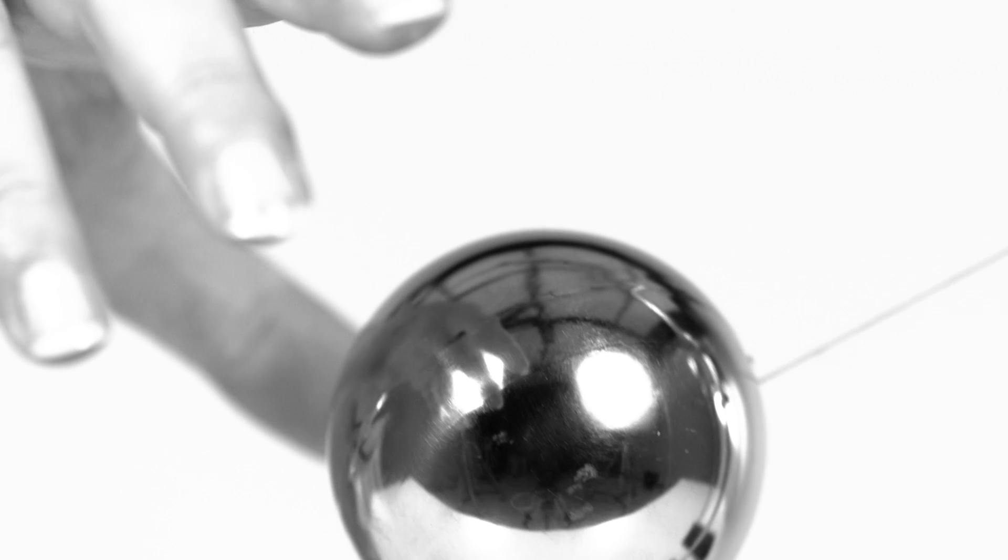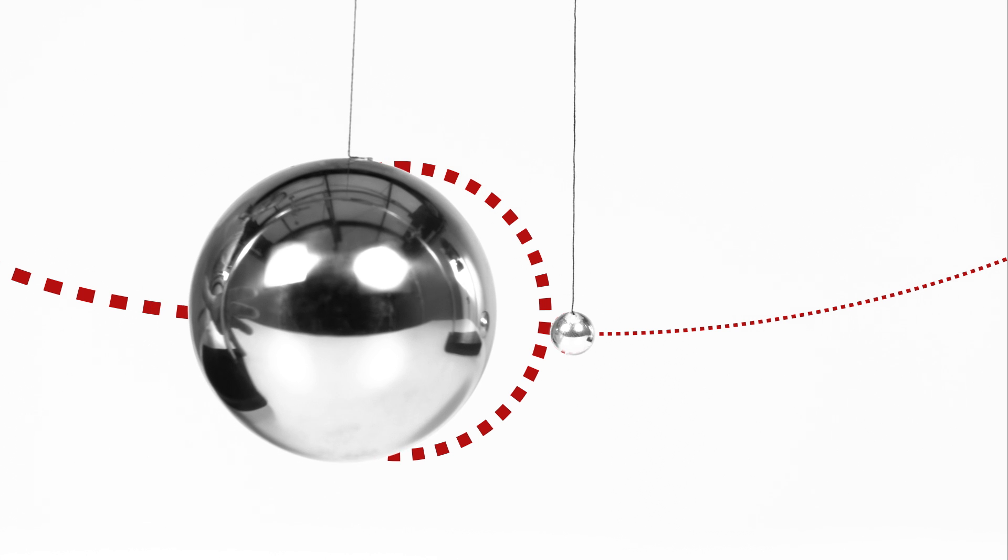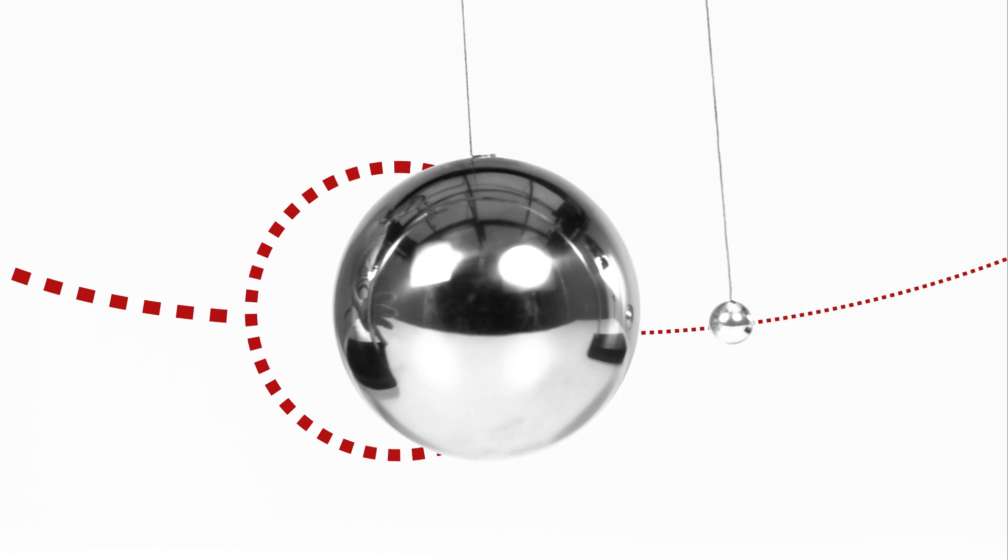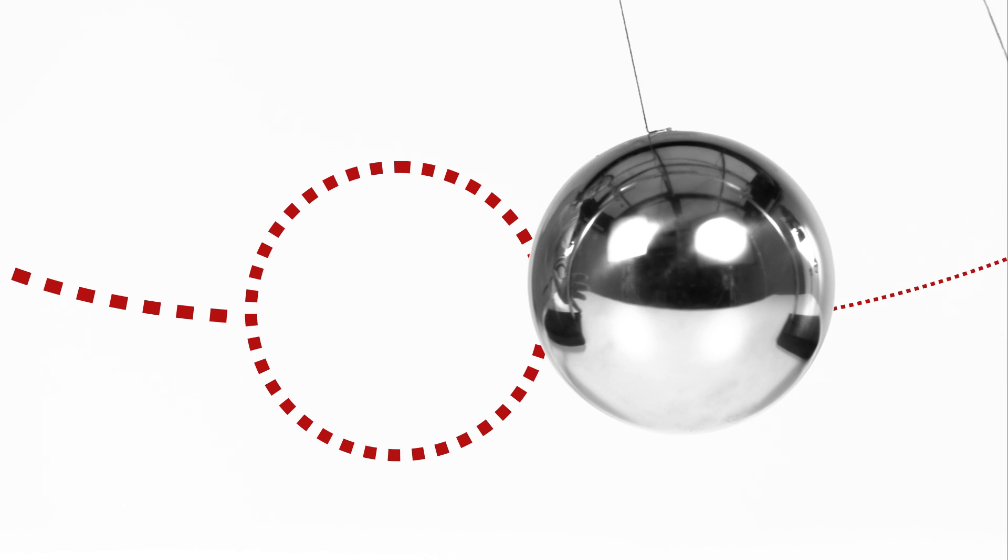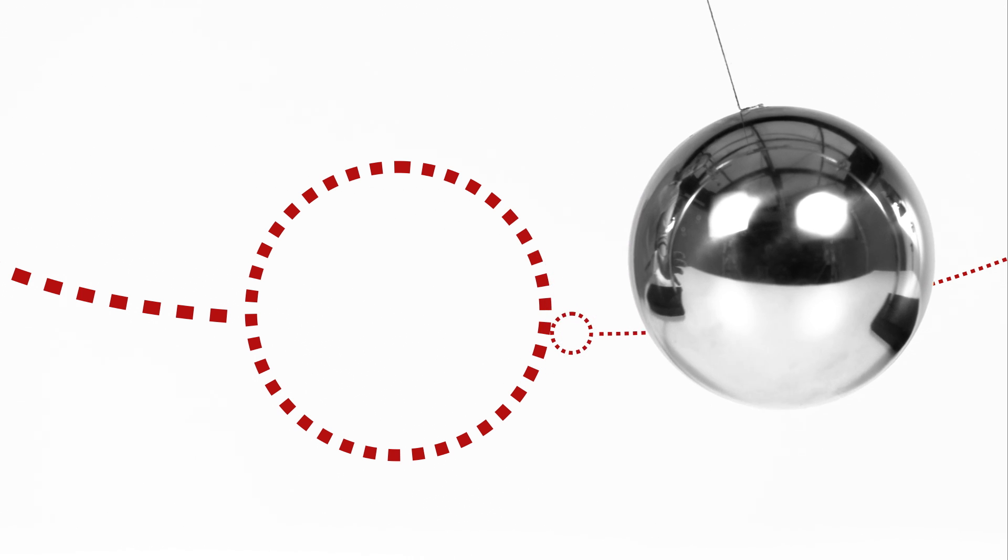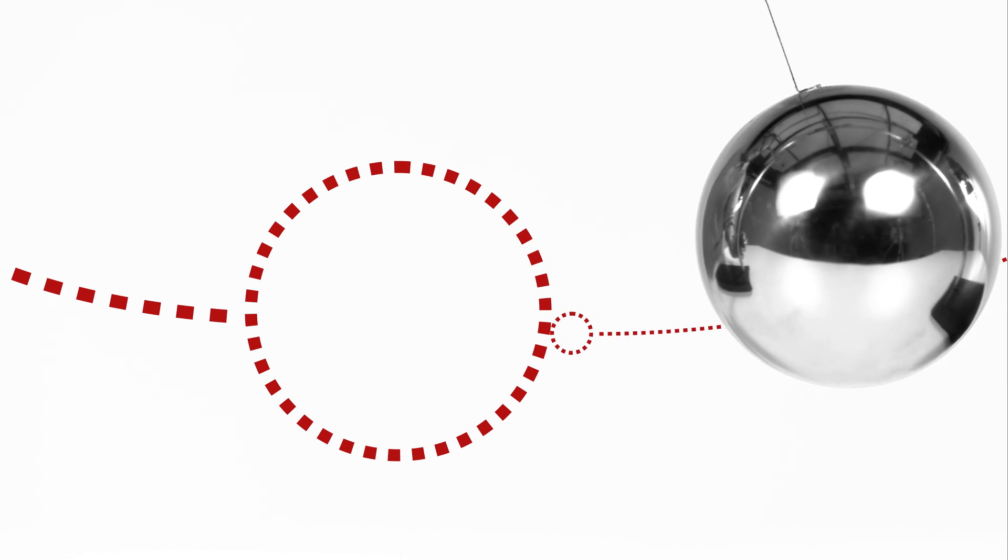And finally, we have the much more massive ball hitting the stationary small ball. The massive ball is slowed down only slightly, but the small ball shoots away with a much higher velocity, nearly twice as high as the inbound ball speed, just as predicted by our equations.